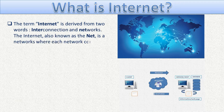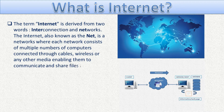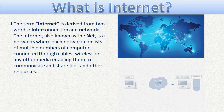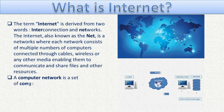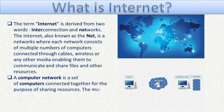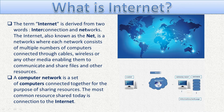The internet, also known as the net, is a network where each network consists of multiple computers connected through cables, wireless, or any other media, enabling them to communicate and share files and other resources. A computer network is a set of computers connected together for the purpose of sharing resources.